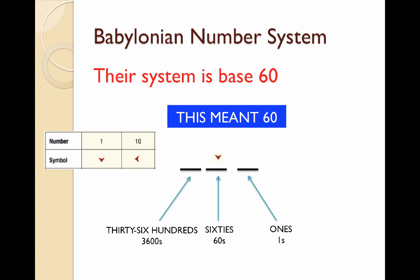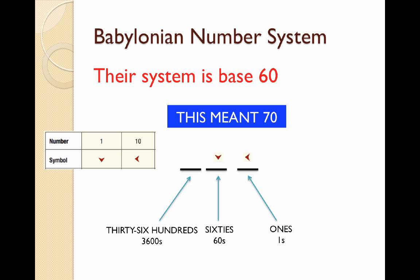They didn't use digits like we do — they used down arrows and left arrows, because of the instruments they used. So a down arrow in the sixties column represented 60. Adding a one in the ones column gives 61, 62, 63. Instead of continuing on in a line they put the next number underneath to save space: 64, 65, 66, 67, 68, 69. Because they had a symbol for ten, when you add one more they put a ten symbol in the ones column. It sounds confusing but the upcoming examples will help.